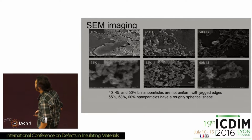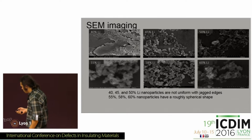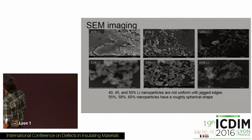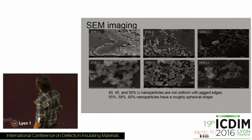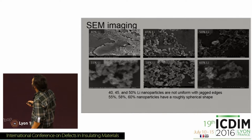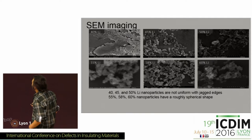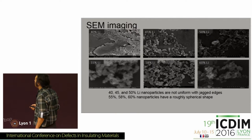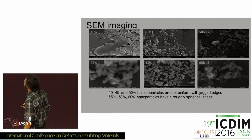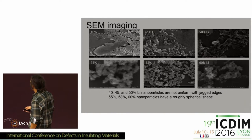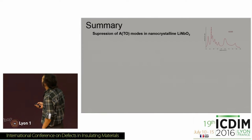Looking at the scanning electron microscope images, you can see there's an improvement in the resulting nanocrystals as you increase from the lithium-poor end up to the lithium-rich side. At first there are a lot of clumps and they're not very uniform in size or shape. As you increase, they become more uniform in size and also become spherical in shape.